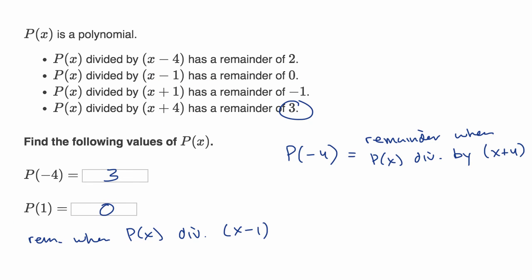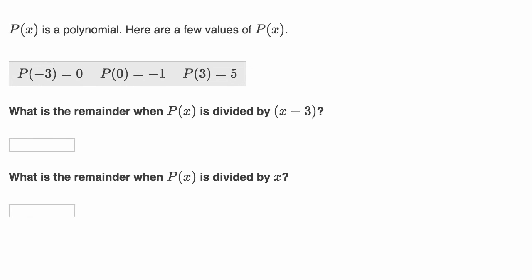Let's do one last example. P(x) is a polynomial, and they give us a few values of P(x). They say, what is the remainder when P(x) is divided by x minus three? The remainder when P(x) is divided by x minus three would be P of positive three. Whatever value of x makes this entire expression equal zero. P of positive three is equal to five.